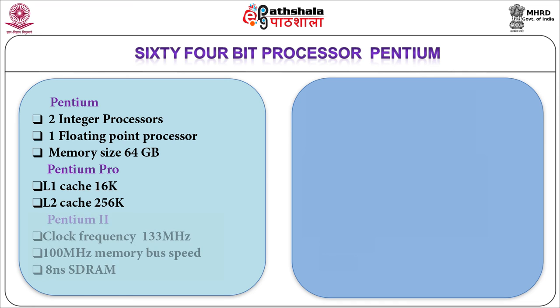In Pentium 2, Level 2 cache was placed on a small circuit board along with the Pentium 2 module to improve performance. This onboard L2 cache operates at 133 MHz and stores 512 KB of information. A clock frequency of 100 MHz is used for memory transfer, with 8-nanosecond SDRAM used for higher speed transfer. It is used in motion video and 3D imaging.